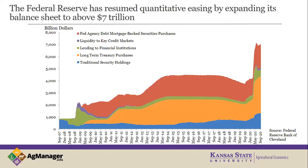Now we're back up to $7+ trillion. The question is how long would unwinding take. Back in 2016-17, based on the maturities for those securities, it was looking at about seven to ten years. Given the Fed's policy of saying they will do what it takes to support this economy, I would say at least that, if not a little bit more. This expanded quantitative easing is likely here for some time.